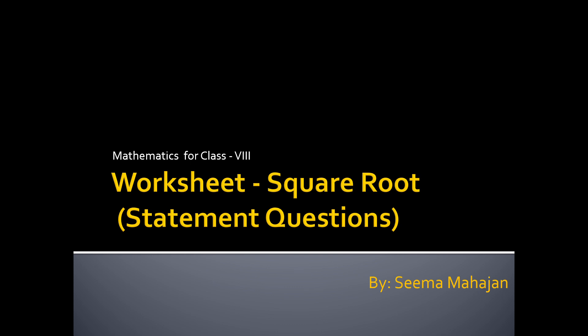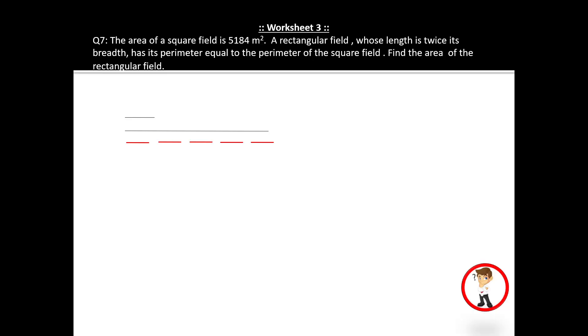Now we will take question number 7. The question is: the area of a square field is 5184 square meters. A rectangular field whose length is twice its breadth has its perimeter equal to the perimeter of the square field. Find the area of the rectangular field.